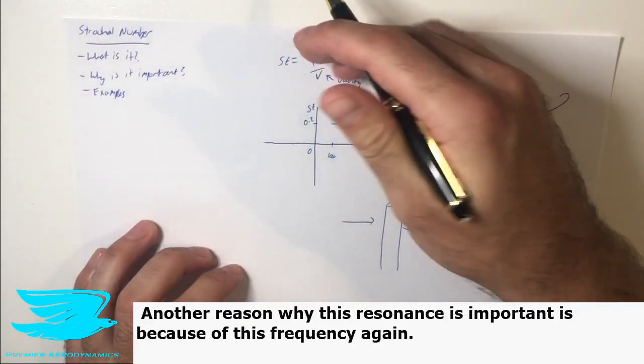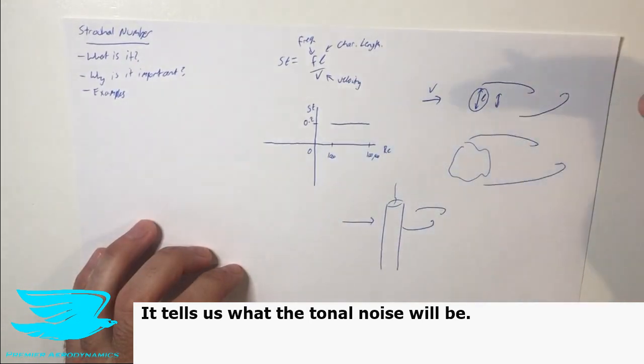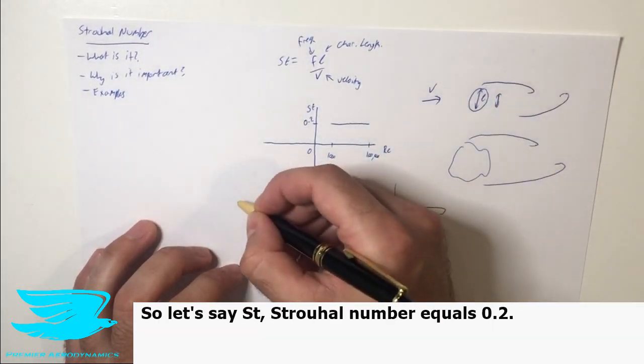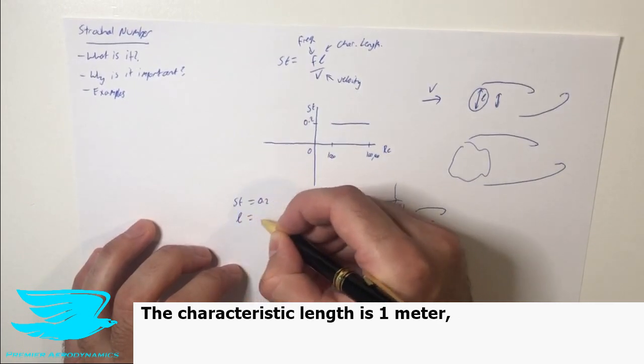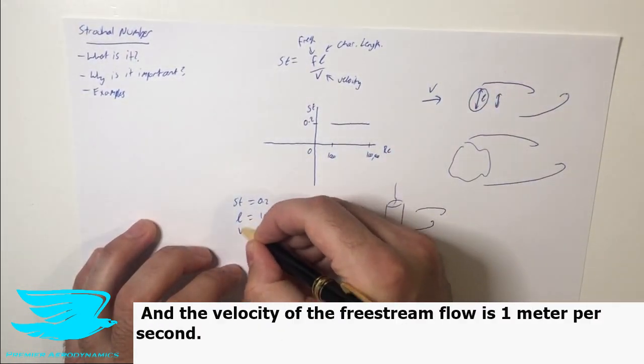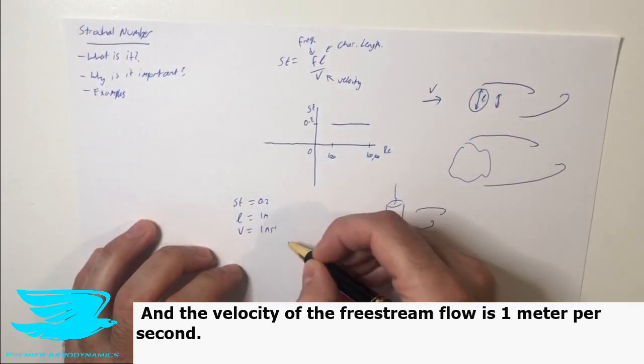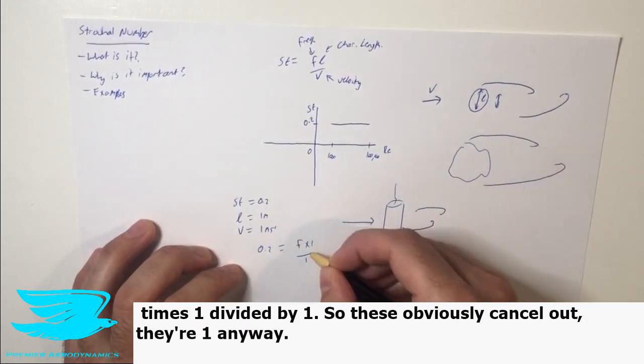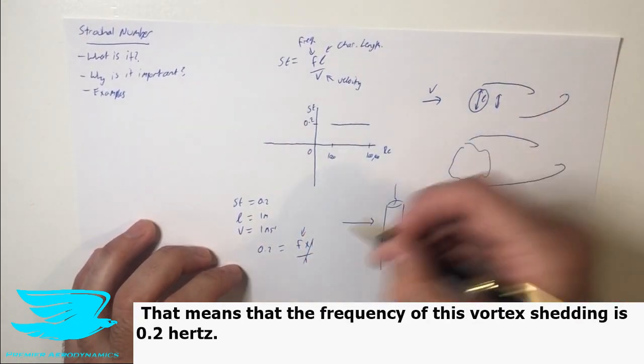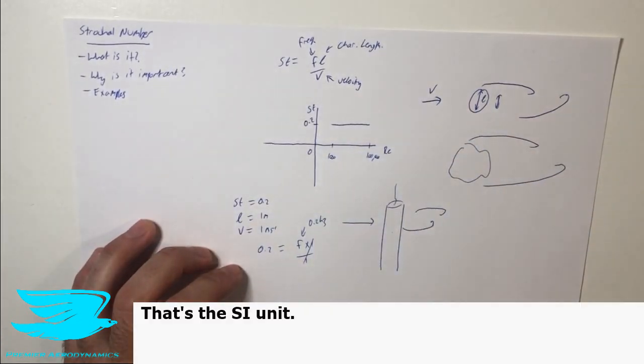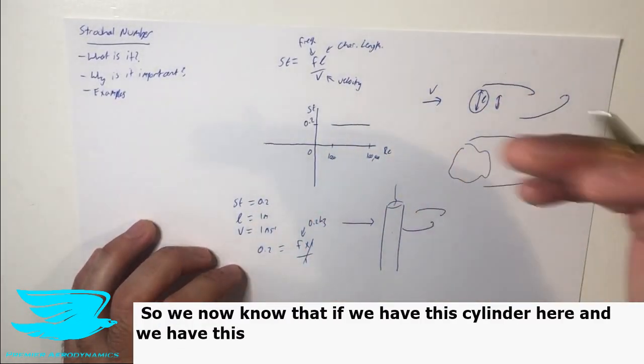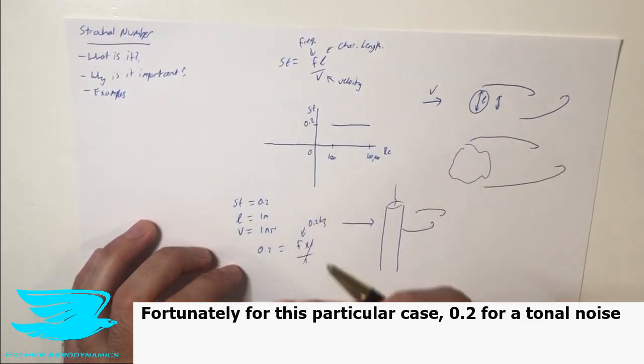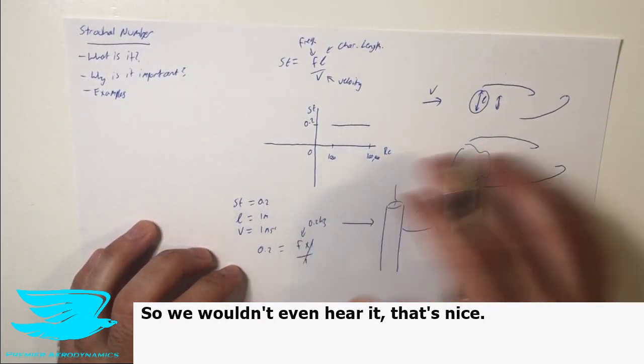Another reason why a Strouhal number is so important is because of this frequency, again, it tells us what the tonal noise will be. So let's say we have a Strouhal number of, as I mentioned, 0.2 for the cylinder, for this entire Reynolds number range. So let's say St Strouhal number equals 0.2. The characteristic length is 1 meter, and this is the diameter. And the velocity of the free stream flow is 1 meter per second. So 0.2 equals the frequency of this vortex shedding pattern times 1 divided by 1. So these obviously cancel out, they're 1 anyway. That means that the frequency of this vortex shedding is 0.2 hertz. That's the SI unit. So we now know that if we have this cylinder here, and we have this shedding at 0.2, that's going to be the tonal noise. Fortunately, for this particular case, 0.2 for a tonal noise is below the frequency that humans can hear. So we wouldn't even hear it. That's nice.